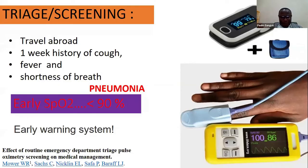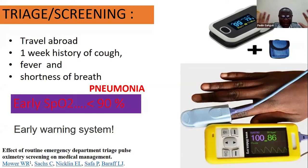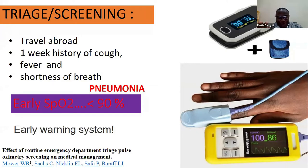This next slide shows a pulse oximeter and an article published on the effect of routine emergency department triage pulse oximeter screening on medical management. That article shows that with a history of traveling abroad and a one-week history of cough, fever, and shortness of breath, this patient fit the case definition, and we could have detected hypoxia with a pulse oximeter — either she saw a family doctor, went to a clinic, or even at home with a pulse oximeter on her finger.